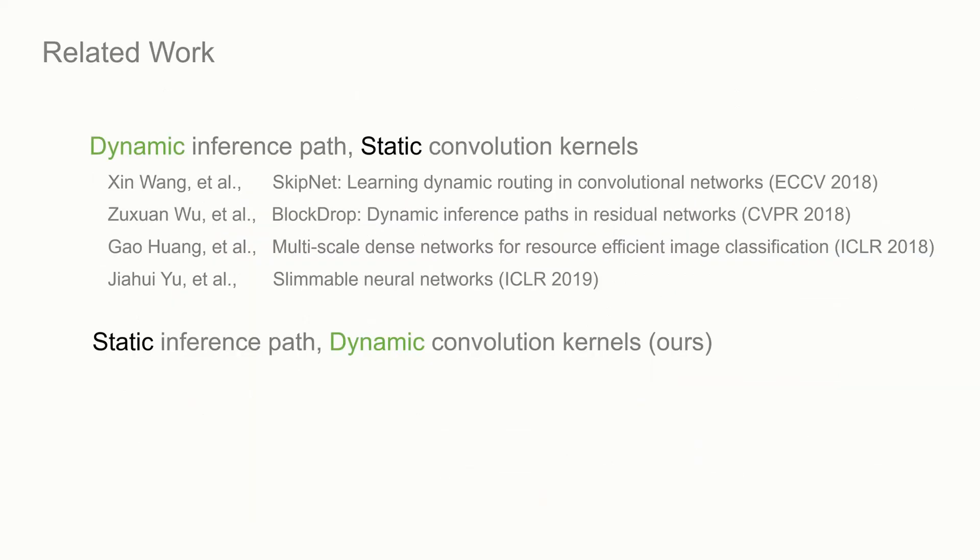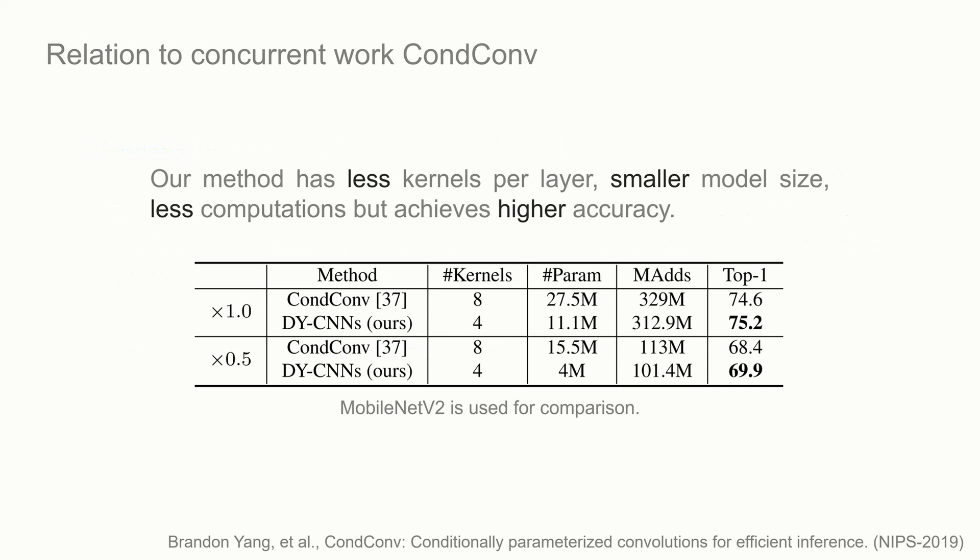Our work is related to the recent studies on dynamic inference, where the kernel weights are static, but the inference path is dynamic. Our method does not change the inference path, but focuses on dynamic convolution kernels. Compared to the concurrent work, CondConv, our method has less kernels per layer, smaller model size, less computations, but achieves higher accuracy. The key difference is that we use different constraints on the attention output. Thank you.